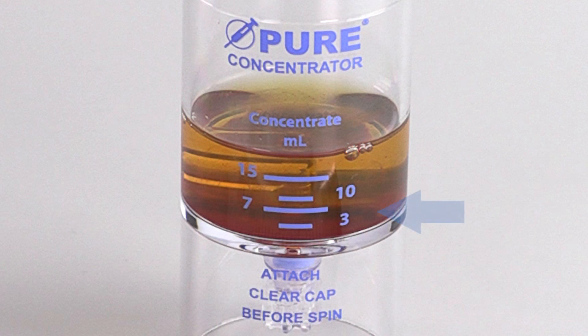After centrifugation, the bone marrow buffy coat layer will be clearly visible at the bottom of the device.